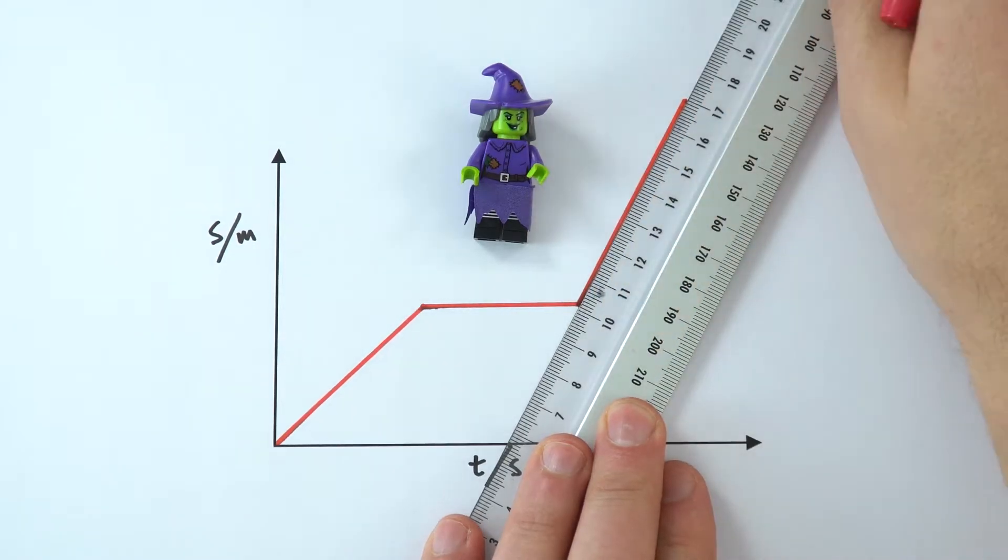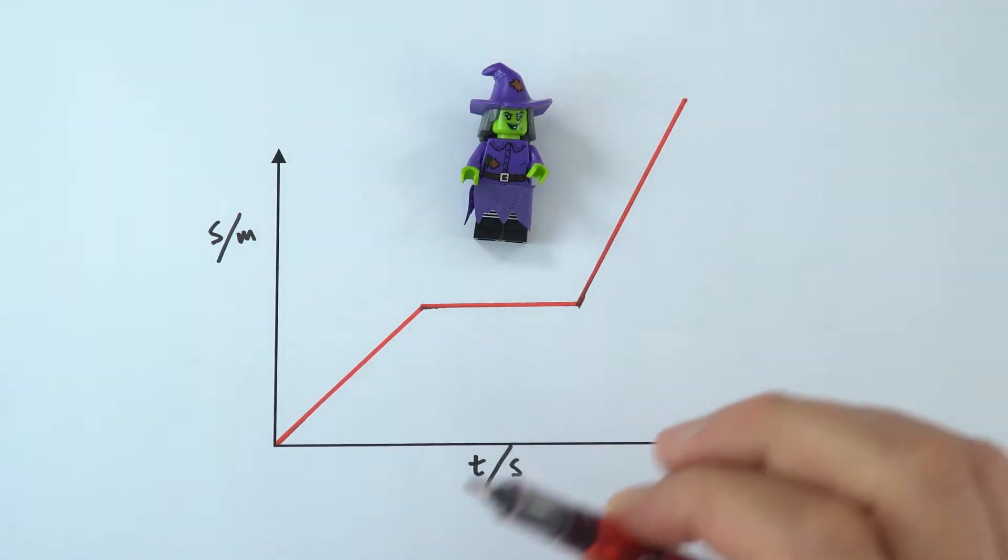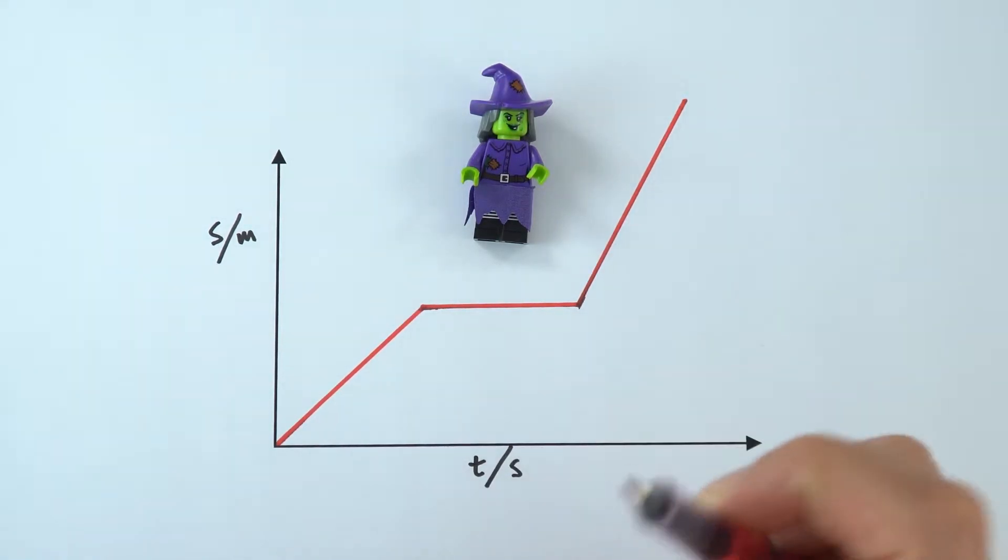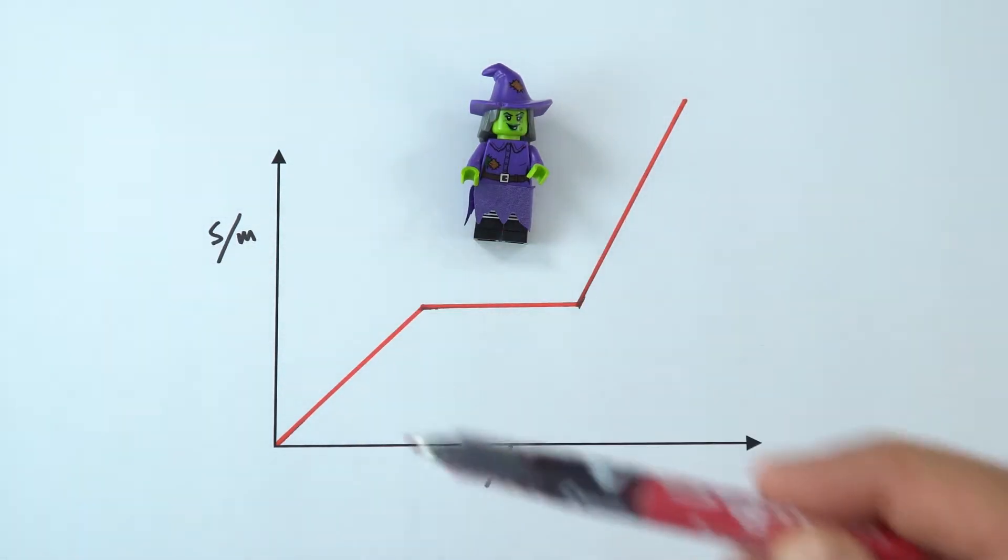So in the same amount of time, a greater distance has been covered. And this is really useful, because what this does is it starts to visualise and actually represent the motion of a real object. It could be a witch, it could be a ball, it could be something, it could be anything to be honest, because what we can do is we can represent that journey on a distance time graph.